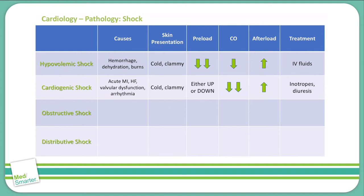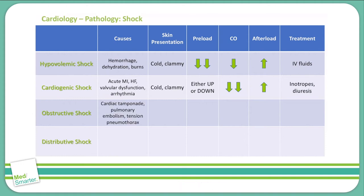Treat cardiogenic shock with positive inotropes and diuresis. Diuresis is used to decrease the preload if we're struggling with an increase in preload.